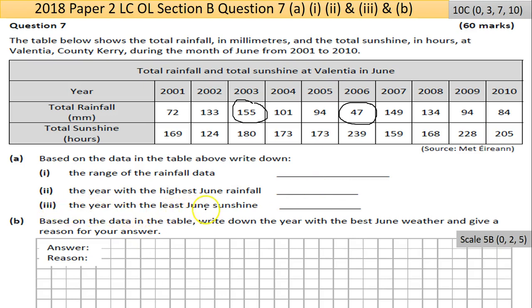Part A, part three: the year with the least June sunshine. Now we're looking at the sunshine, the bottom row. The least number is 124, so 2002 is the year with the least sunshine.